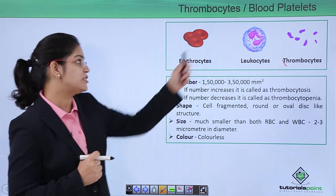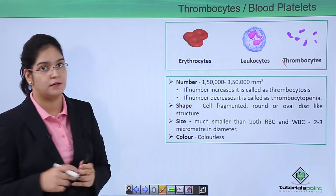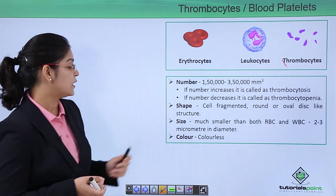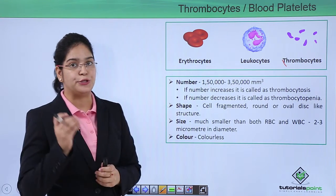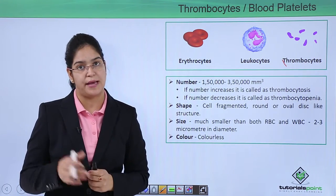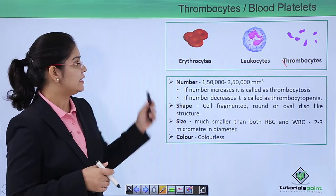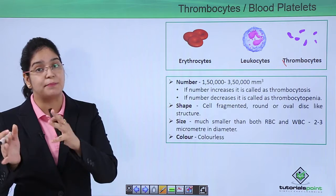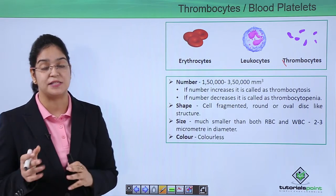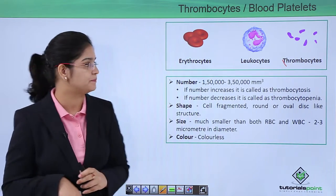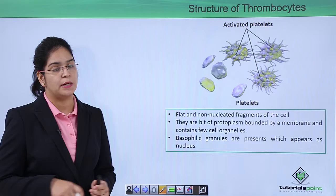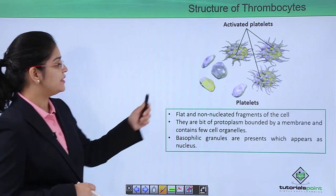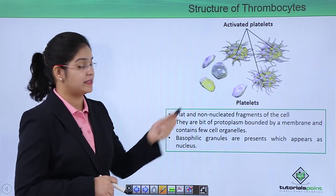As they are cell fragments, platelets can be round, oval, or disc-shaped structures. They are much smaller than other cells of our blood like RBC or WBC — generally two to three micrometers in size. Their color is colorless because they do not have any pigment, unlike the pigment present in RBC which is hemoglobin.